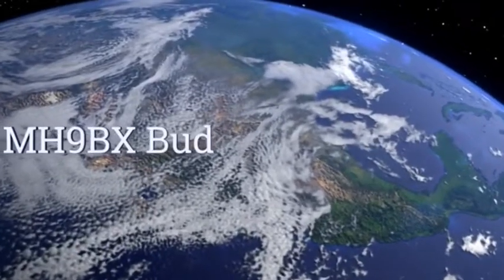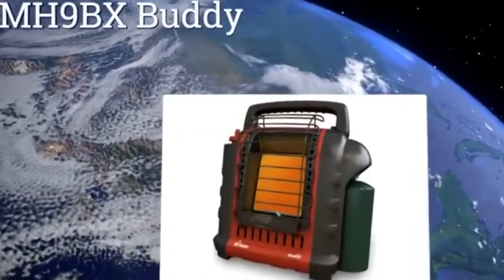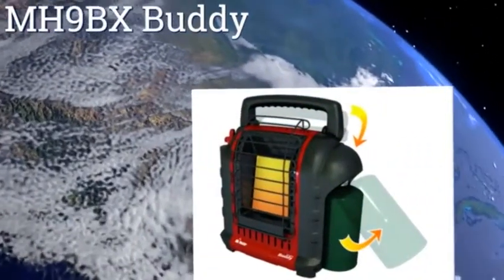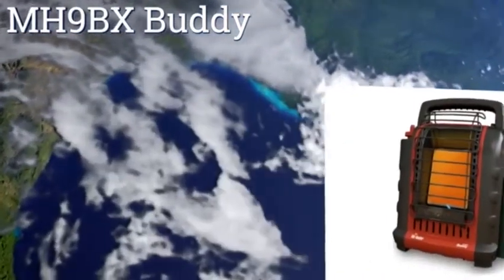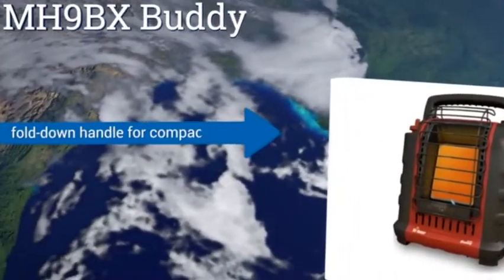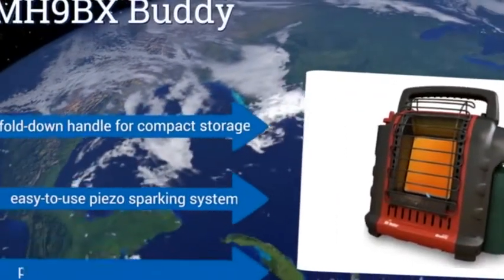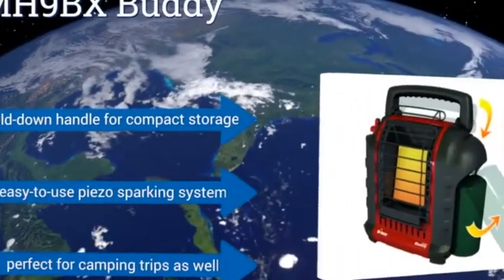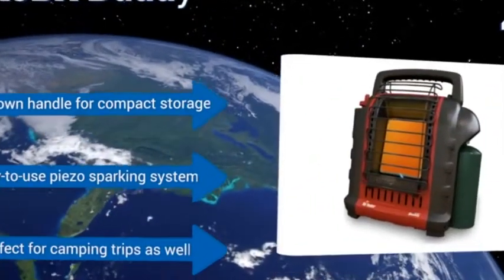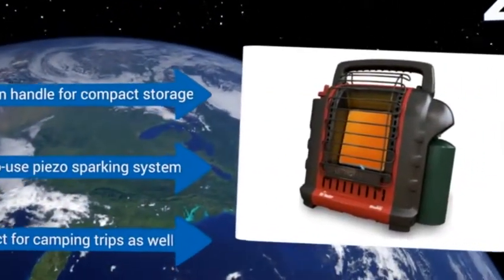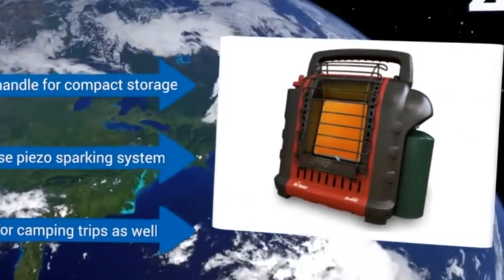At number 2, the Portable Indoor-Outdoor MH9BX Buddy easily connects to a 1-pound propane tank and is a great choice for a smaller space of up to 200 square feet. It's also a safe option, as it has an auto-shut-off feature if it gets tipped over or if it detects low oxygen levels. It's equipped with a fold-down handle for compact storage and an easy-to-use piezo sparking system. It's perfect for camping trips as well.